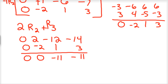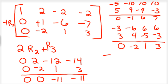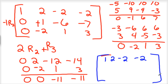New matrix time. We've got the top row staying the same: 1, 2, negative 2, negative 2. Our second row is already how we want it: 0, 1, negative 6, and negative 7. And then our third row is 0, 0, negative 11, negative 11.